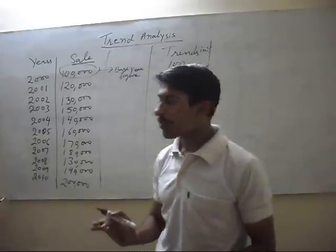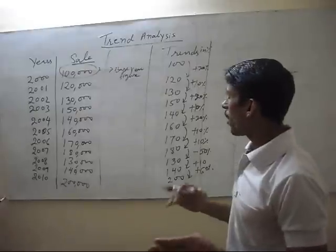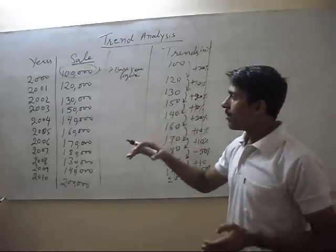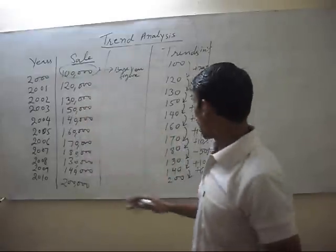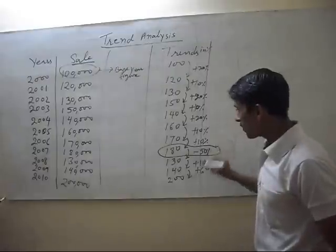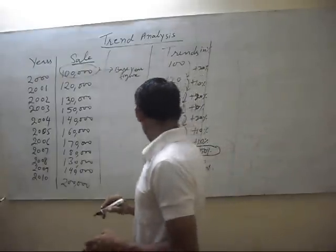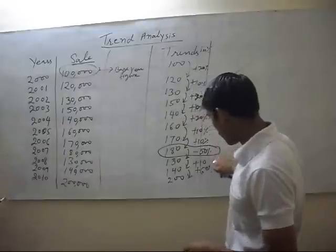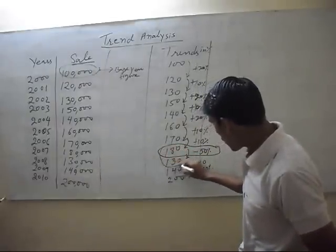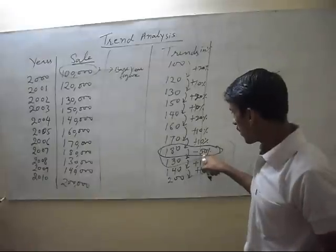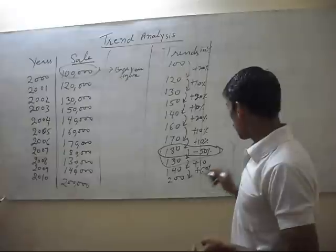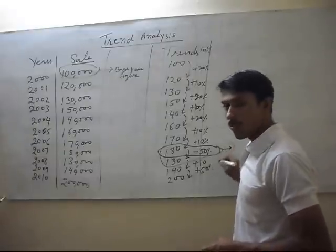From this trend we can see our sales value is increasing from one year to another year. But there is one abnormal year when our sales decreased by 50%. We note this point as it requires further investigation.